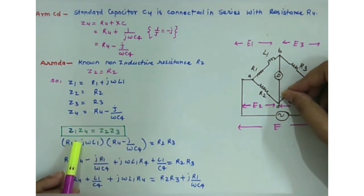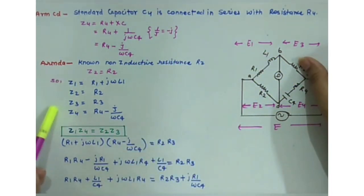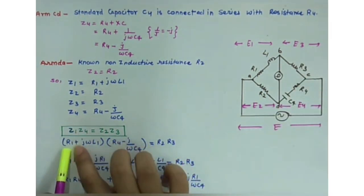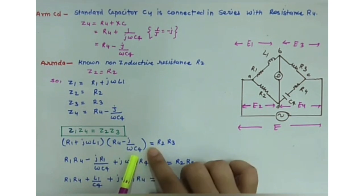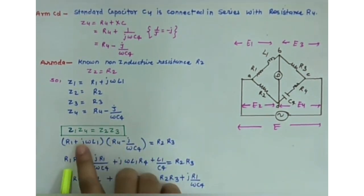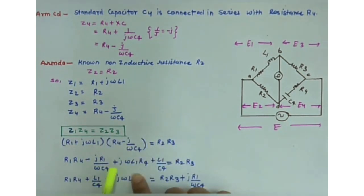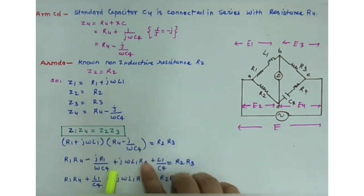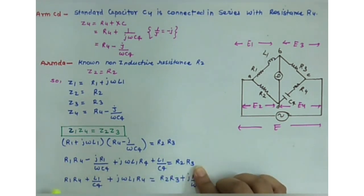Using the general balance equation of the AC bridge Z1·Z4 = Z2·Z3, and substituting the impedance values: (R1 + jωL1)(R4 − j/(ωC4)) = R2·R3. Expanding the brackets gives: R1·R4 − jR1/(ωC4) + jωL1·R4 + L1/C4 = R2·R3.